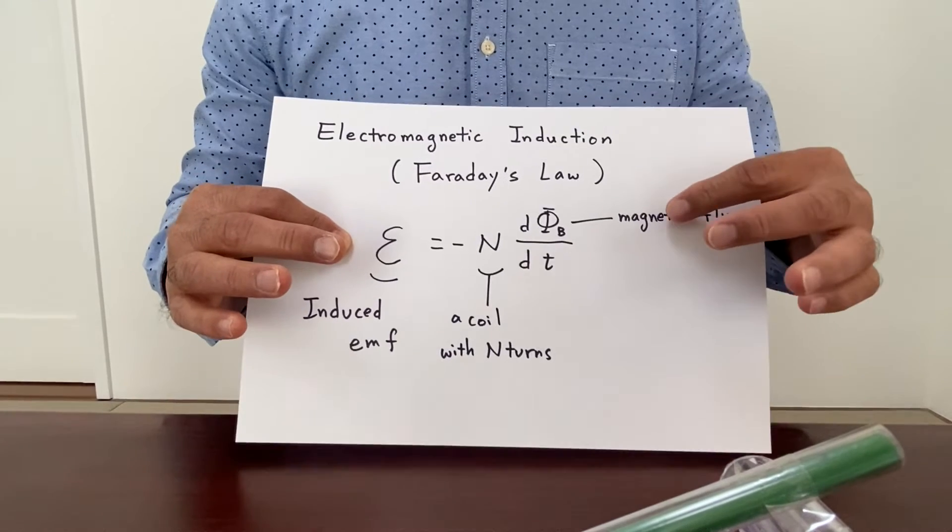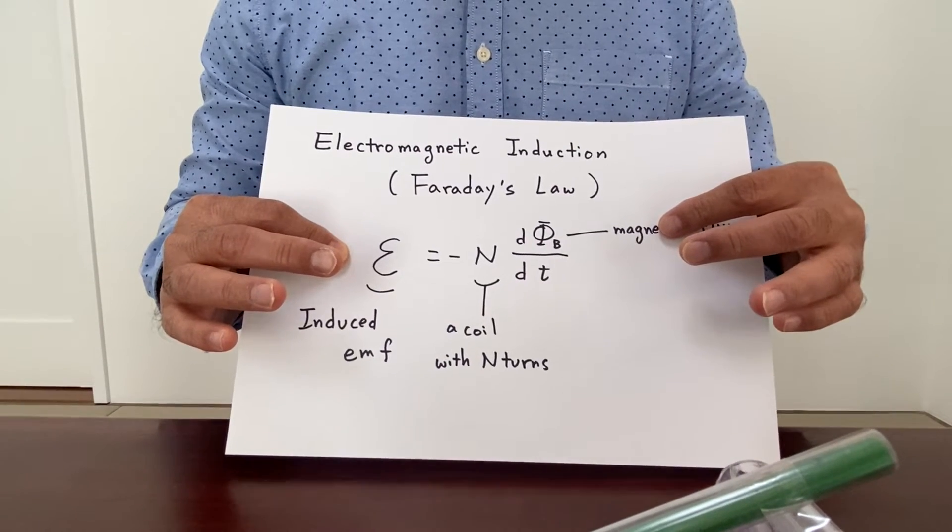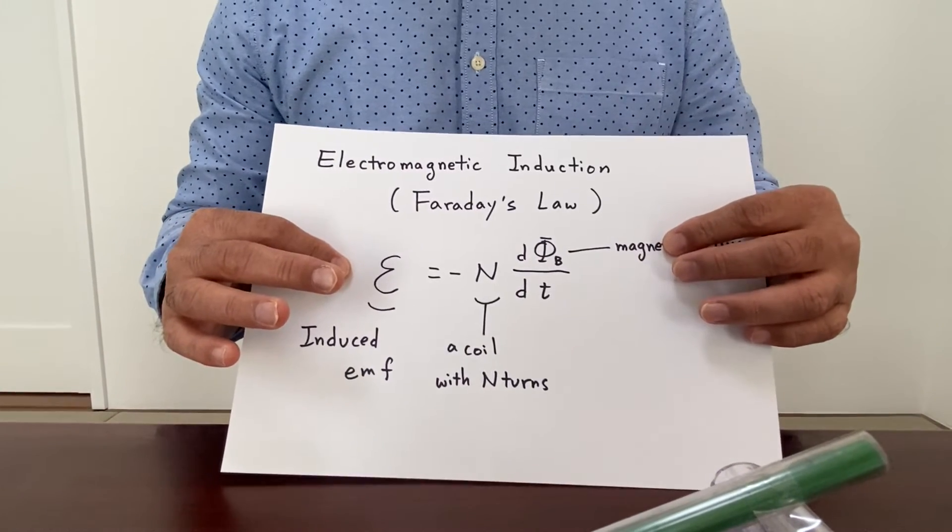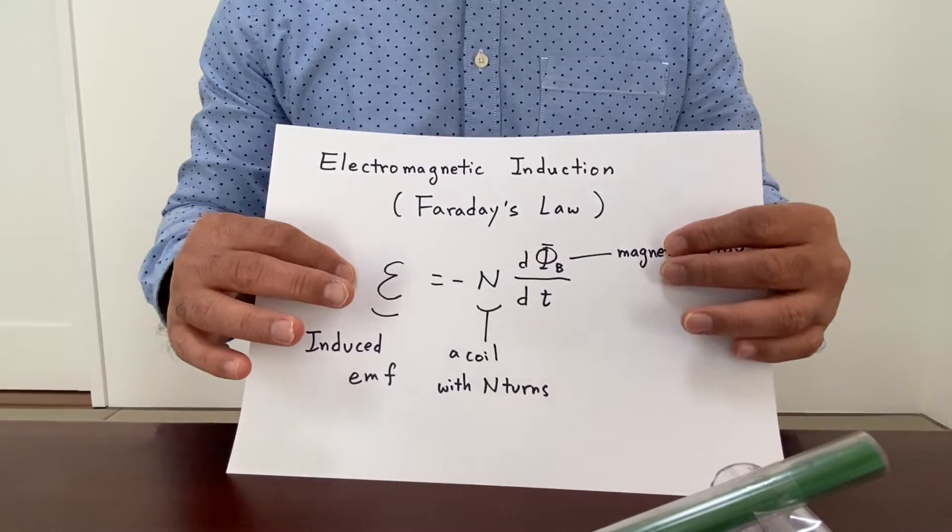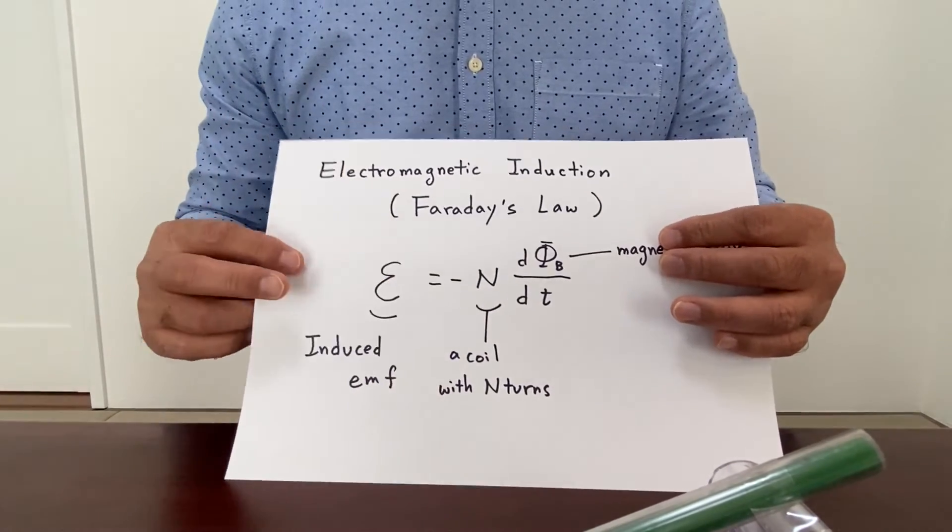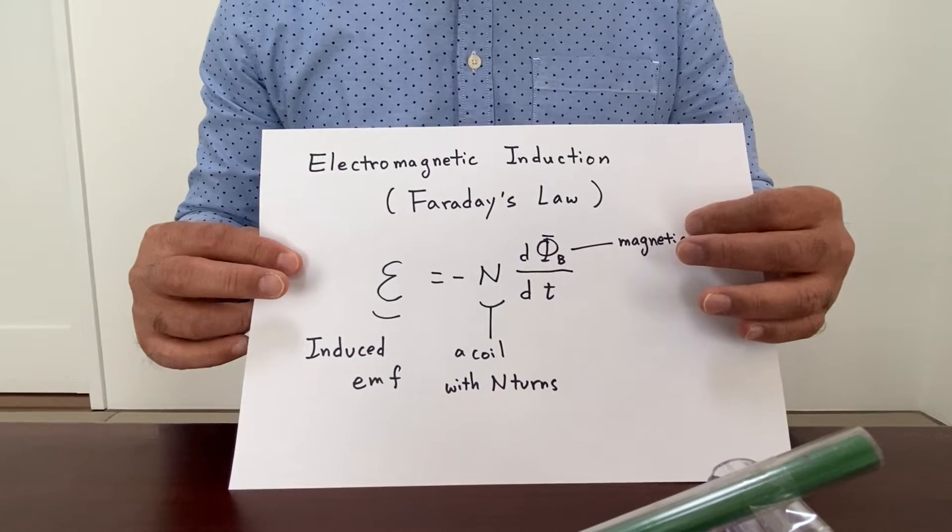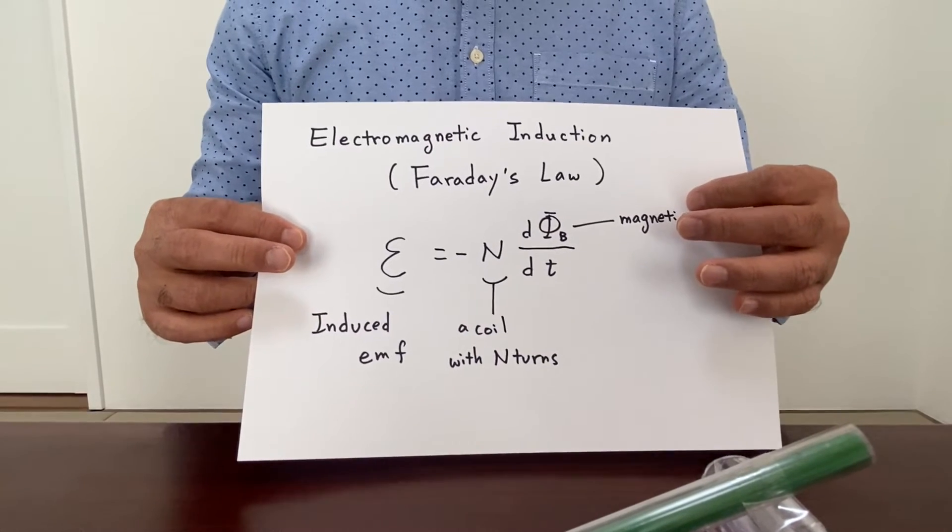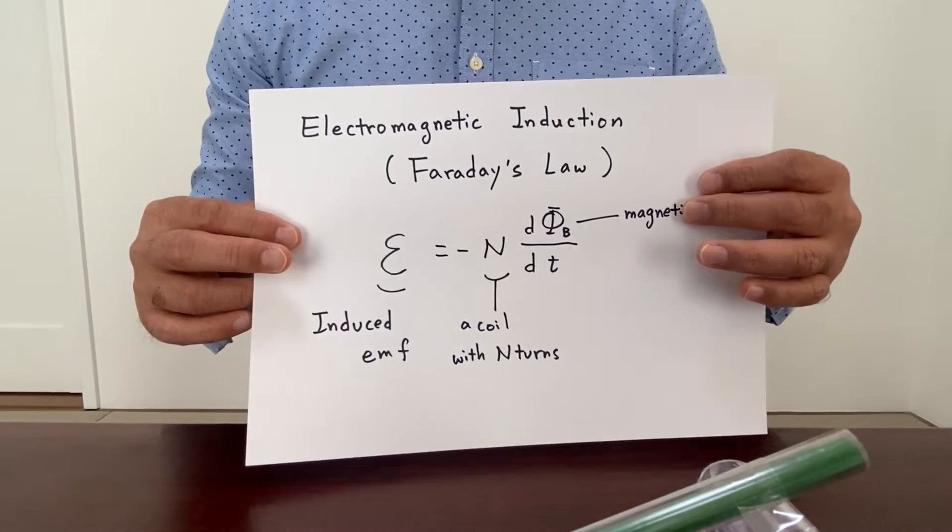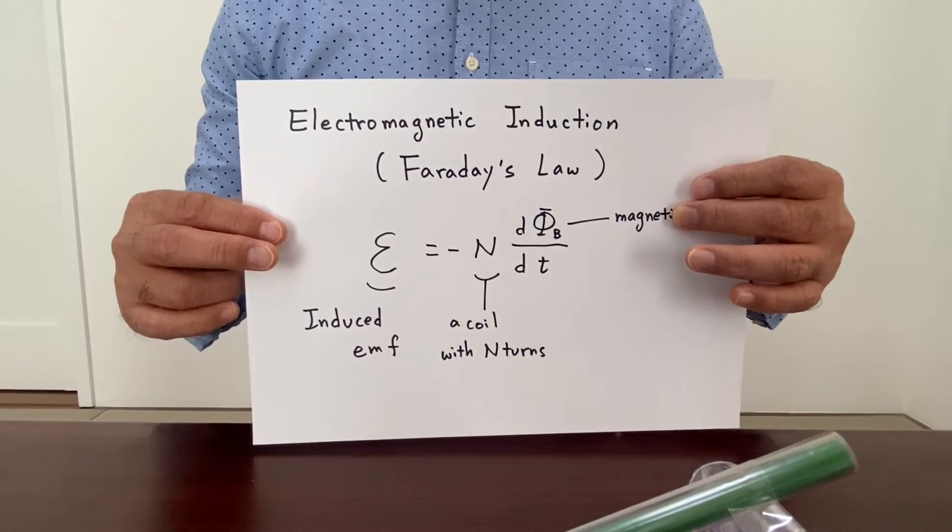If the magnetic flux is increasing, then emf is induced in a negative direction with respect to the magnetic flux. I'd like to show this equation by making a simple experiment.